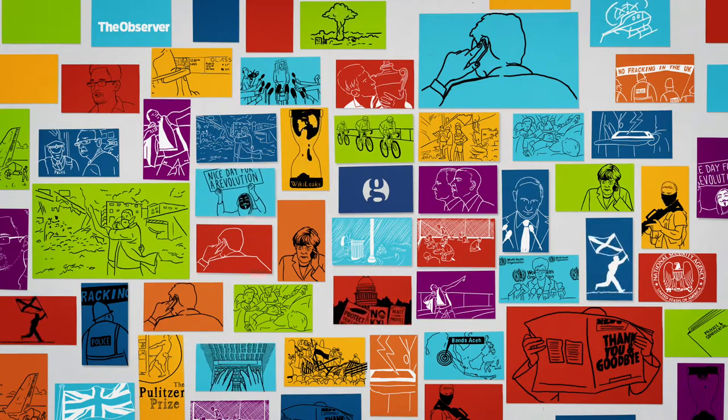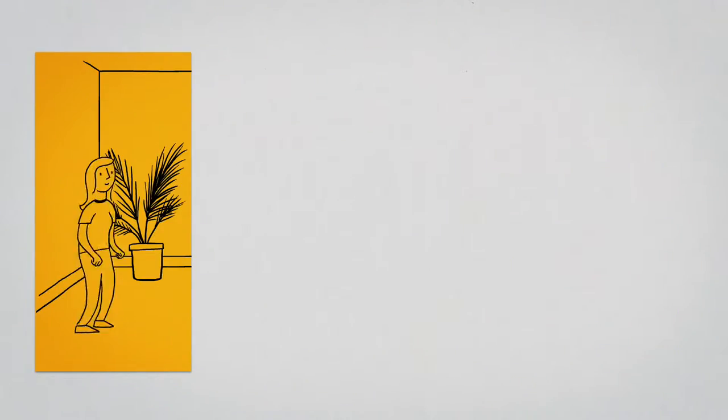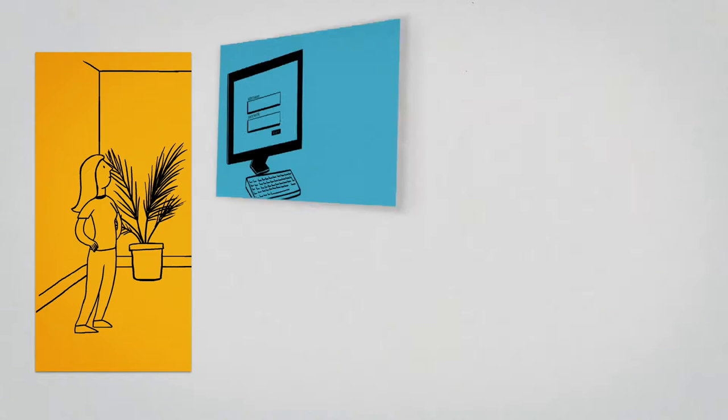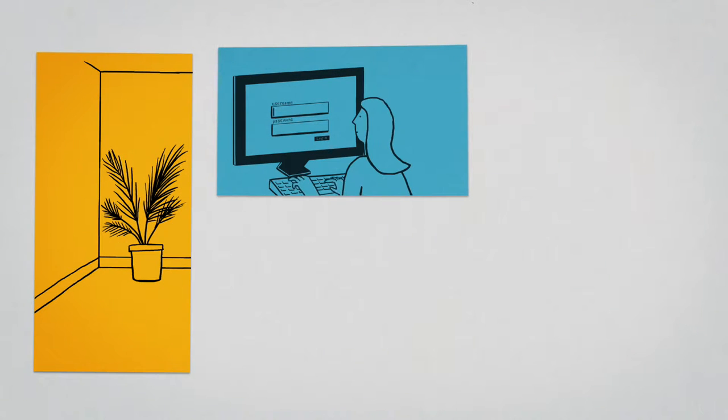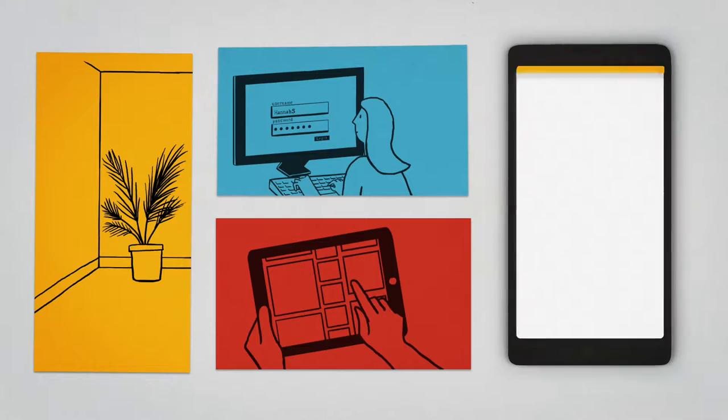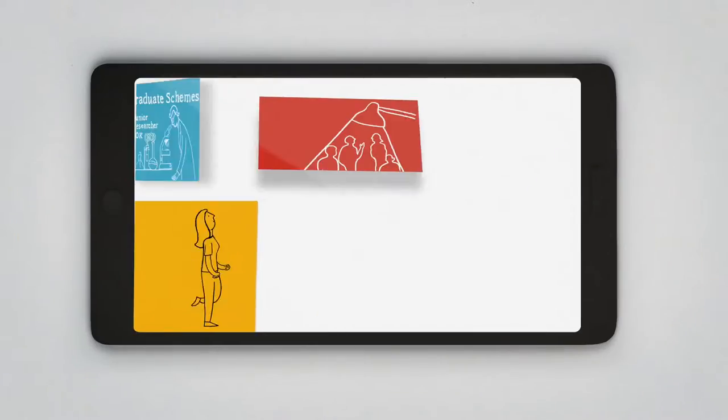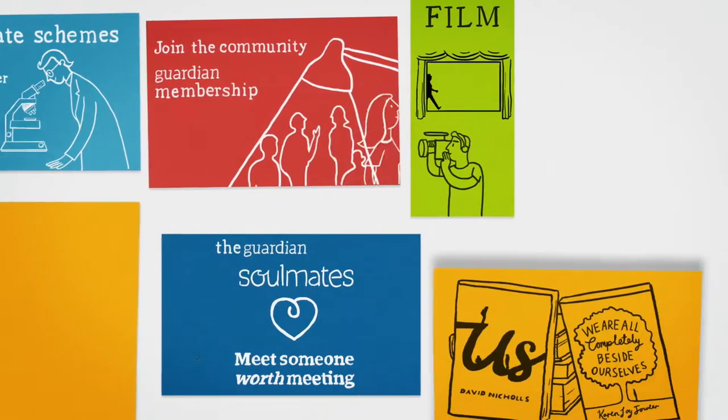One of the ways we generate revenue to safeguard our journalism for the future is by using your data. For example, when you sign in to The Guardian's websites or use cookies when you browse, to make advertising more relevant to you.